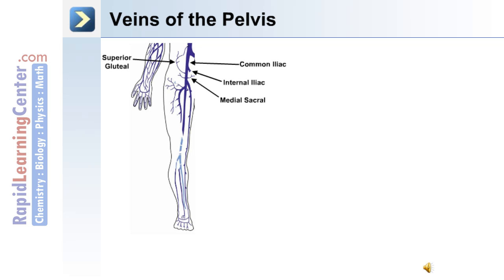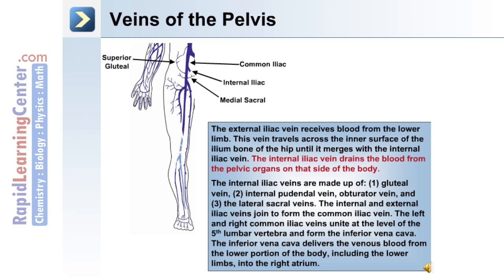The veins of the pelvis include the medial sacral, internal iliac, common iliac, and the superior gluteal vein. The external iliac vein receives blood from the lower limb and travels across the inner surface of the ilium bone of the hip until it merges with the internal iliac vein. The internal iliac vein drains blood from the pelvic organs and is made up of the gluteal vein, the internal pudendal vein, obturator vein, and lateral sacral veins. The internal and external iliac veins join to form the common iliac vein. The left and right common iliac veins unite at the level of the fifth lumbar vertebra to form the inferior vena cava, which delivers venous blood from the lower portion of the body, including the lower limbs, into the right atrium of the heart.